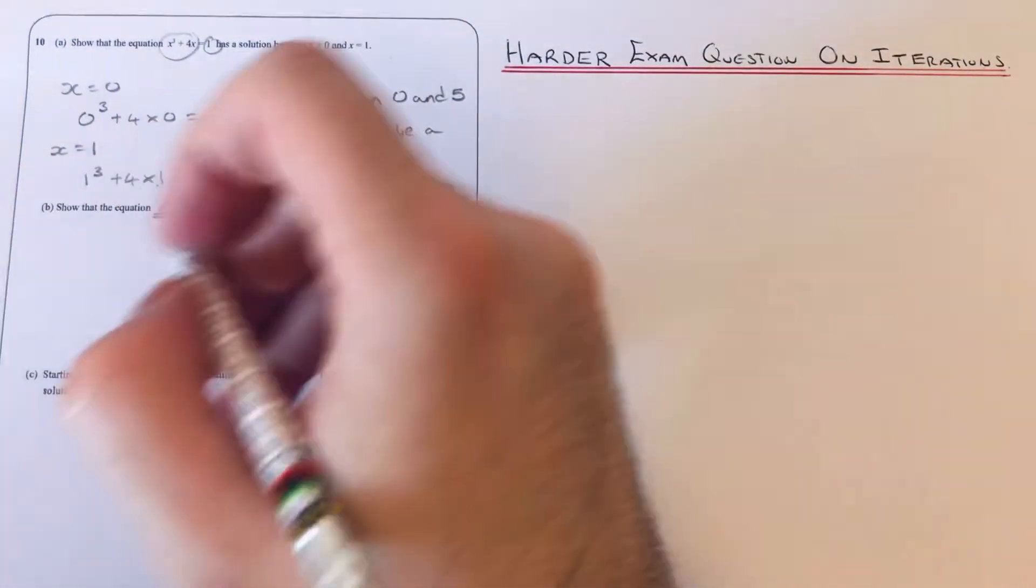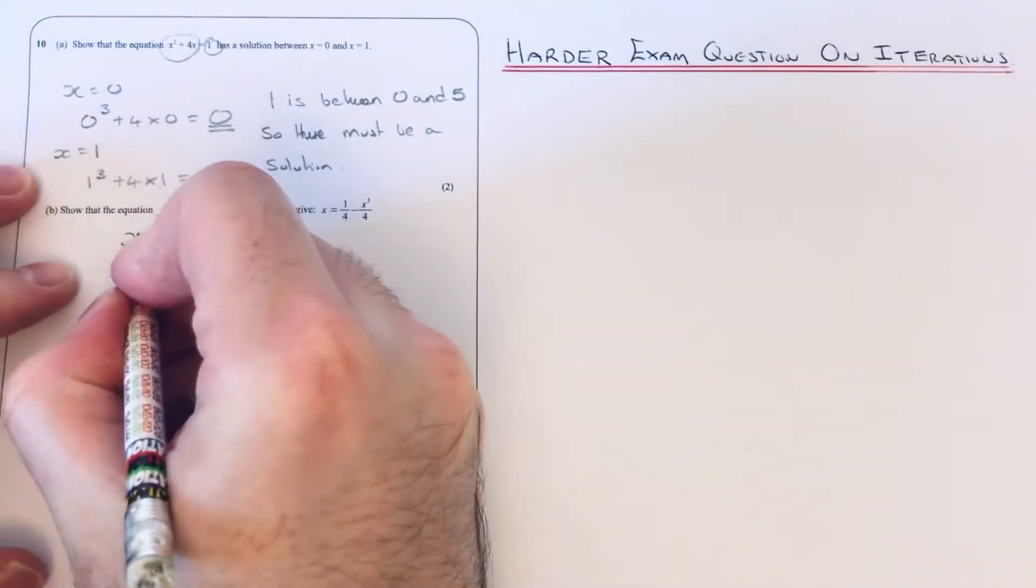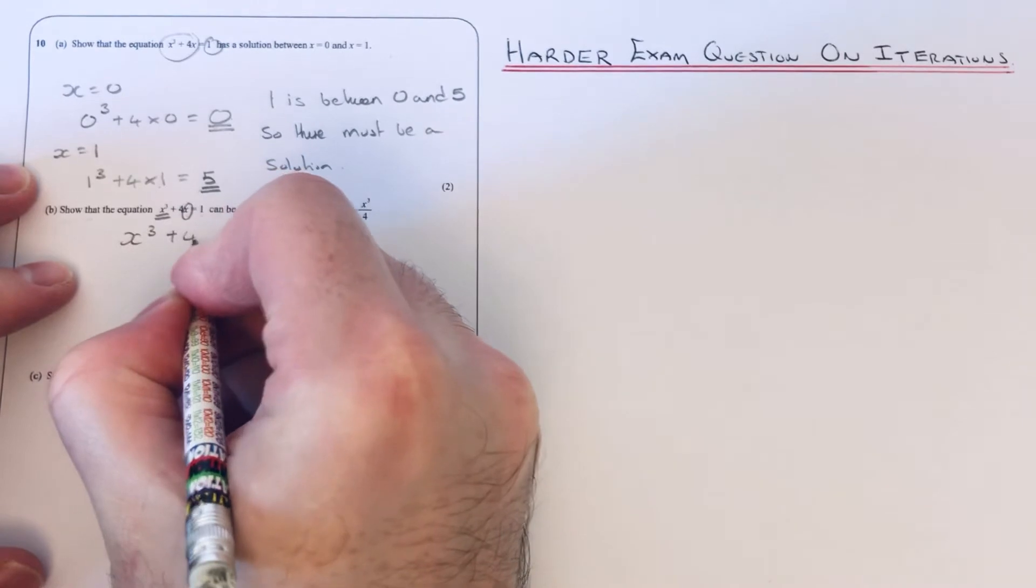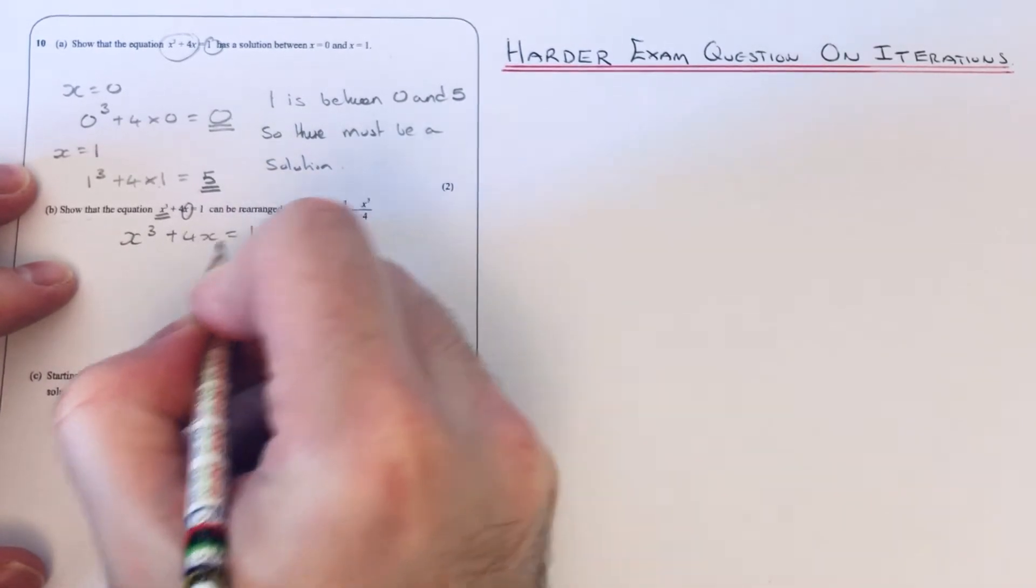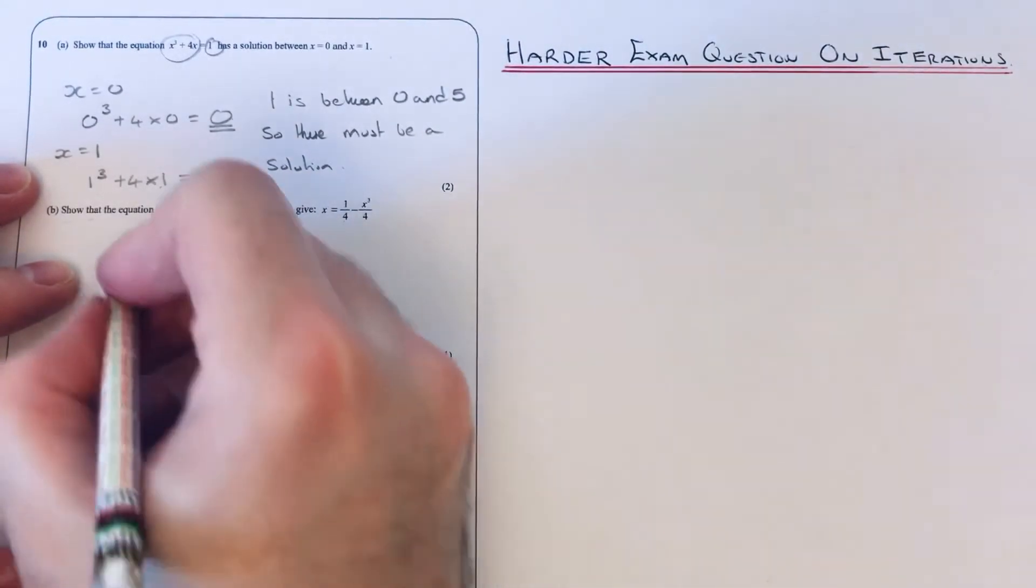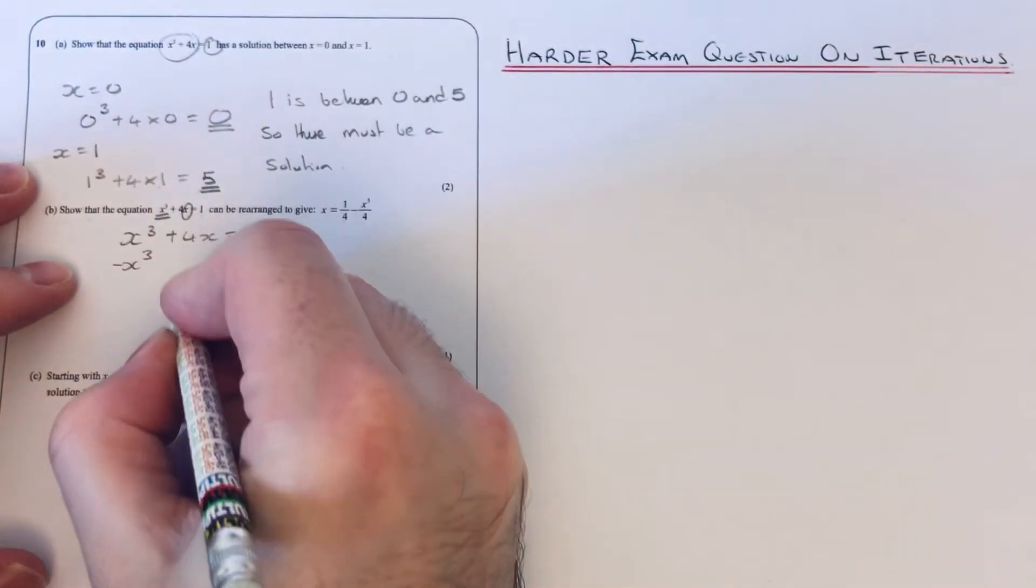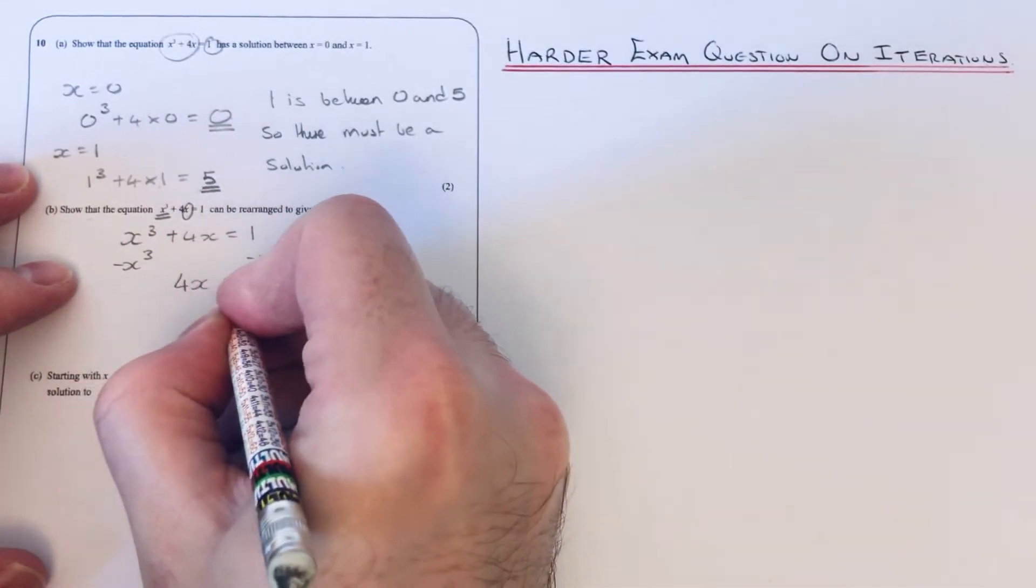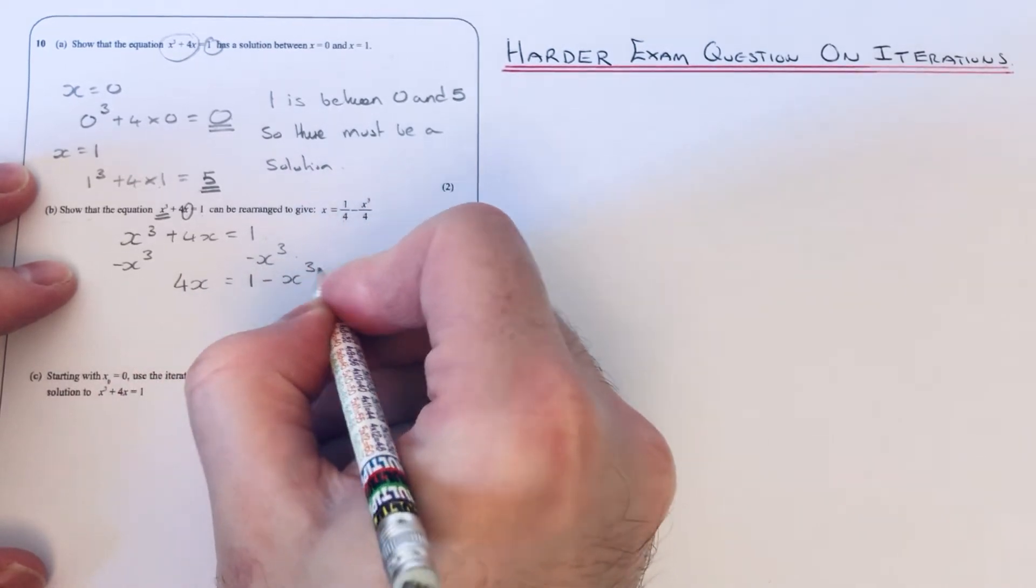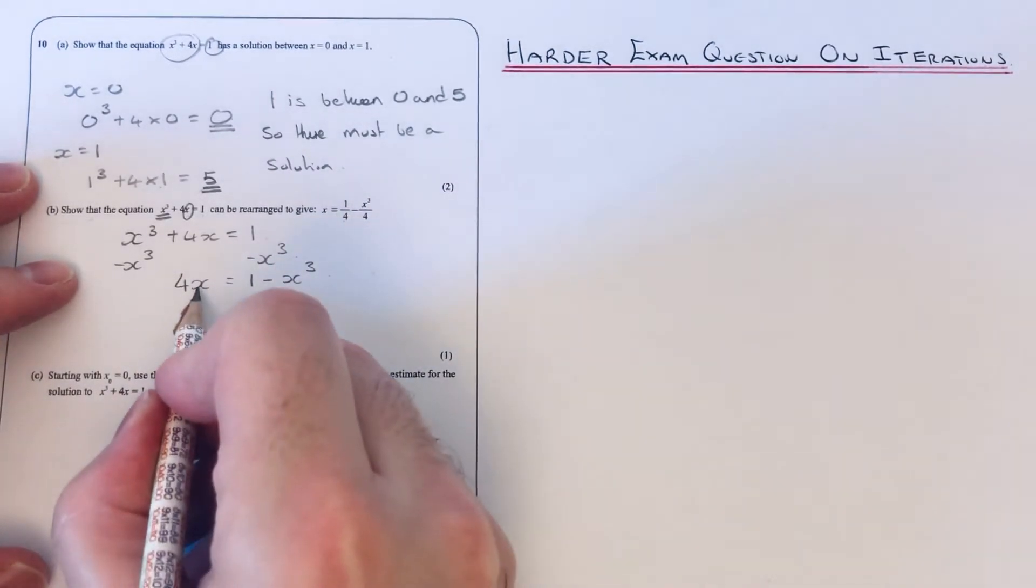Okay, so let's see if we can make that x the subject. First of all, let's take x³ off both sides. So that will give us 4x = 1 - x³.